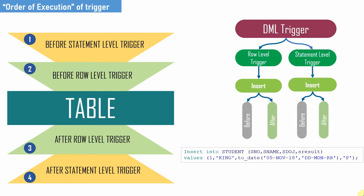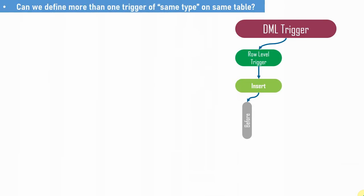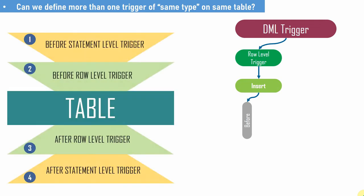This is the order of execution we covered in the last video. Now let us see: is it possible to create more than one trigger of the same type on the same table? Let us take one particular category — for example, the before insert row level trigger. Is it possible to create more than one before insert row level trigger? Yes, it is possible. I am going to create three before row level insert triggers on the same table and then understand what is the order in which these triggers get fired.